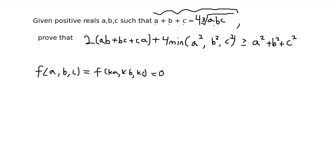Here we see a, b, and c are all degree one. And 4 times the cube root of abc — well, abc itself is third degree, but since you're taking the cube root of it, it becomes first degree. So we see that if we were to scale up all of the variables by k, the entire equation would just be scaled up by k, so it wouldn't affect the condition.